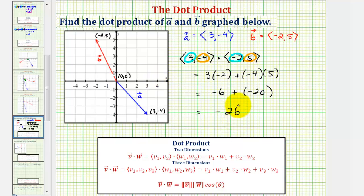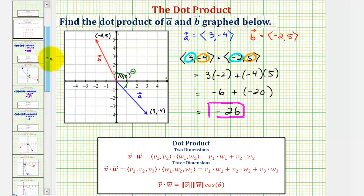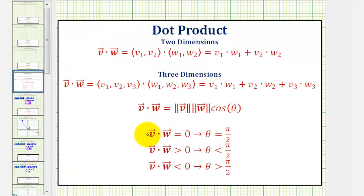The value of the dot product tells us something about the angle theta between the two vectors. Looking at these two vectors on the coordinate plane, the angle theta between them is shown on the graph. One property of the dot product is that if the dot product equals zero, the two vectors are orthogonal or perpendicular, and theta equals pi over two radians.